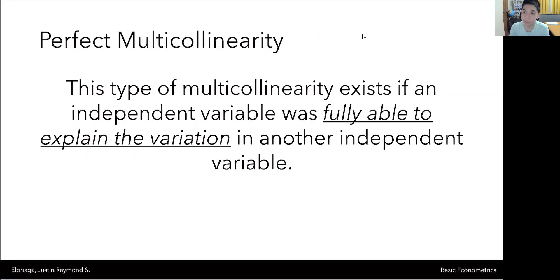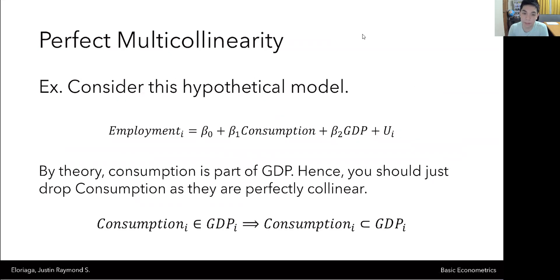The last one is perfect multicollinearity. And this is a type of multicollinearity that exists if an independent variable was fully able to explain the variation in another independent variable. So for example, consider this hypothetical model. You have employment being regressed against consumption and GDP. Now, if you look at this sort of carefully, if you recall your basic macro, using the final expenditure approach, the way we compete for GDP is just Y is equal to C plus I plus G plus X minus M. So if you think about it, GDP is like this overall big circle.